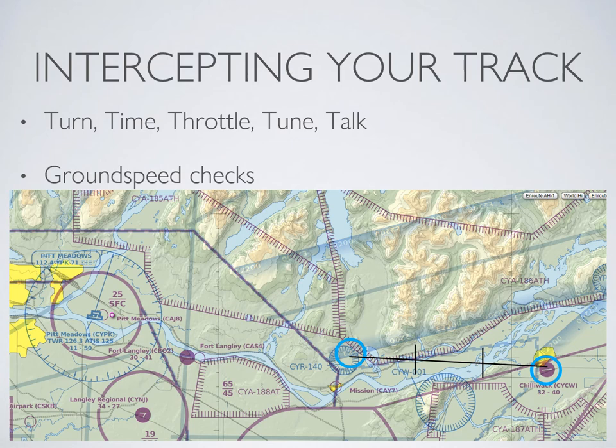In your flight test, you'll want to simulate that you've notified ATC or ATS about your diversion, especially if you've filed a flight plan. Once you've turned onto your track, tune up the correct frequency and make a call with your expected ETA. The last thing you'll want to do is take a ground speed check to make sure that your calculations were correct.